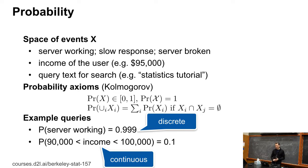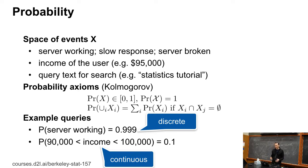We can go fairly quickly over this — the space of events, you might have several. You have the usual Kolmogorov axioms, and I guess everybody knows them.